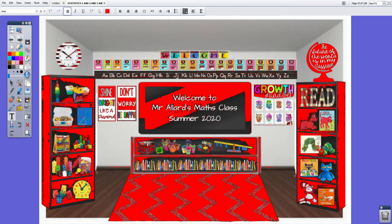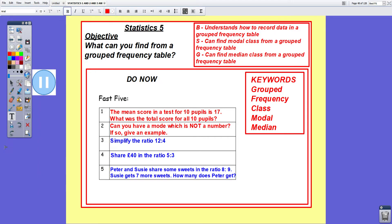Okay moving on. Today we are on to Statistics Lesson 5 and our objective is what can you find from a grouped frequency table. Success criteria: Bronze understands how to record data in a grouped frequency table, Silver can find the modal class, and Gold can find the median class. Our keywords are grouped, frequency, class, modal and median.